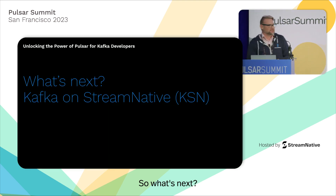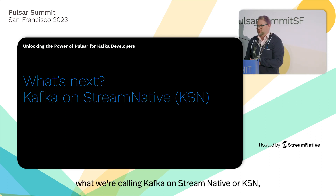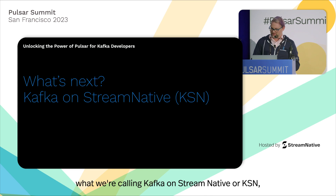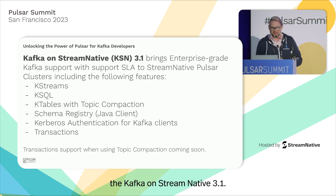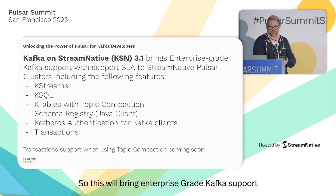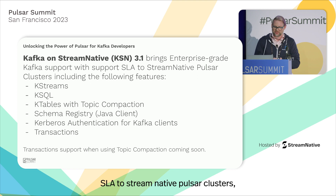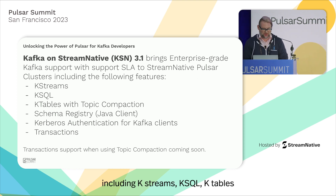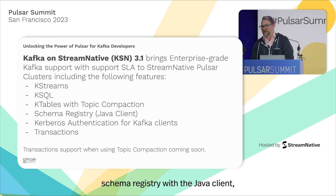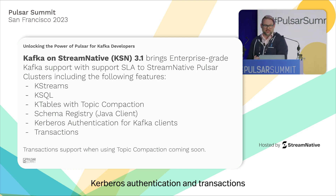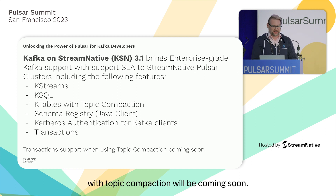So what's next? Stream Native has been working on what we're calling Kafka on Stream Native, or KSN. We're releasing Kafka on Stream Native 3.1, which will bring enterprise-grade Kafka support with our full support SLA to Stream Native Pulsar clusters, including KStreams, KSQL, KTables with topic compaction, schema registry with the Java client, Kerberos authentication, and transactions. Transaction support with topic compaction will be coming soon.